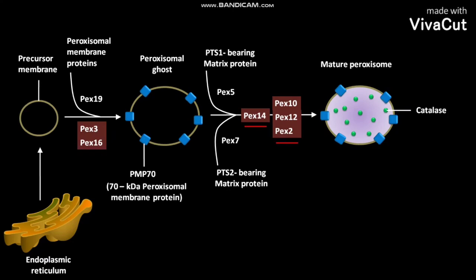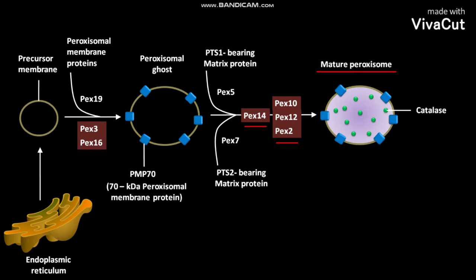PEX-12 and PEX-2, forming a mature peroxisome. PEX-7 binds the PTS-2 sequence in the PTS-2 bearing matrix protein.